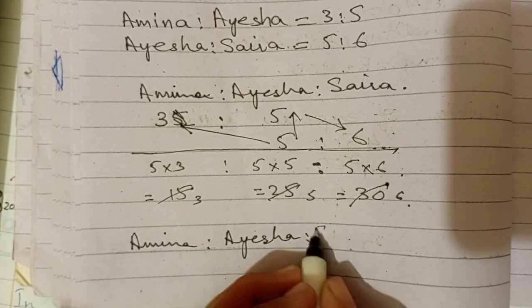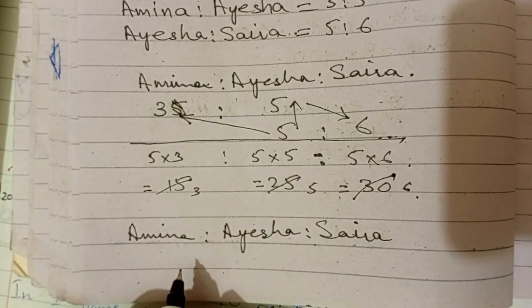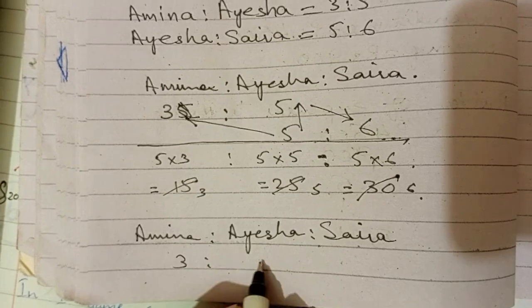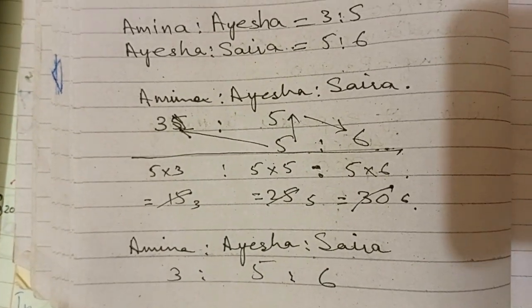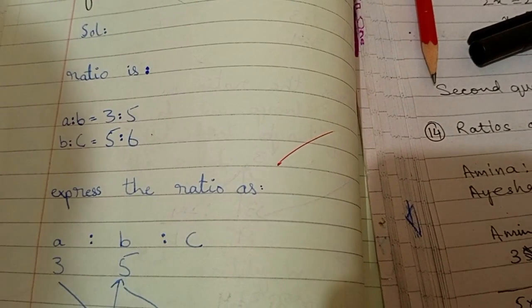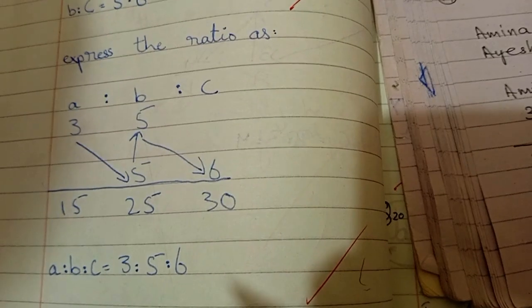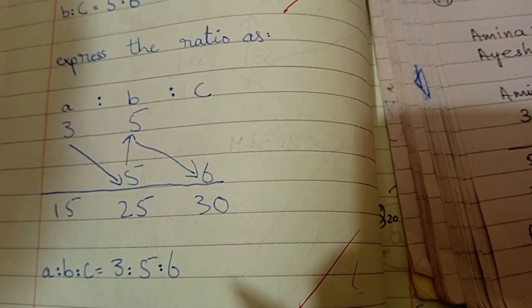3 ratio 5 ratio 6 اس انداز سے کرنا ہے اور اس طرح سے نہیں کرنا ہے.